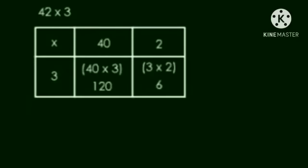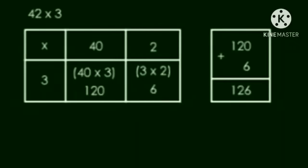Now first we will multiply 40 into 3. The answer is 120. Next we will multiply 3 into 2. The answer is 6. And then we will add both the numbers: 120 plus 6.